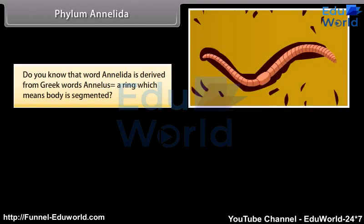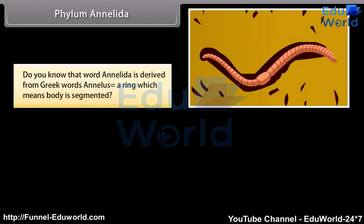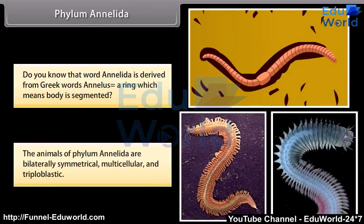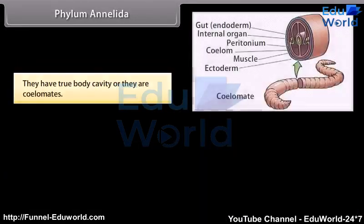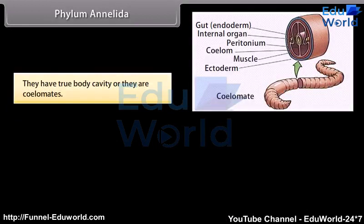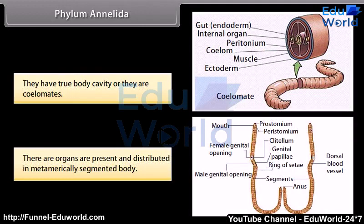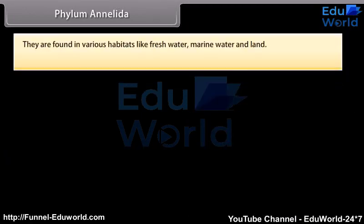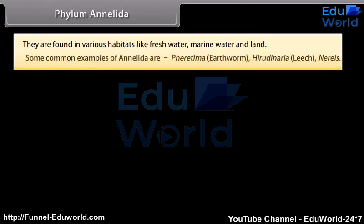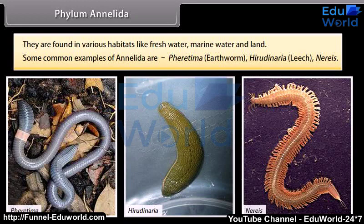Phylum Annelida. The word Annelida is derived from Greek word annilis, meaning ring, which means the body is segmented. The animals of Phylum Annelida are bilaterally symmetrical, multicellular, and triploblastic. They have a true body cavity, or they are coelomates. There are organs present, distributed in a metamerically segmented body. They are found in various habitats like freshwater, marine water, and land. Some common examples are Pheretima (earthworm), Hirudinaria (leech), and Nereis.